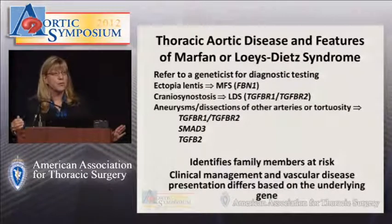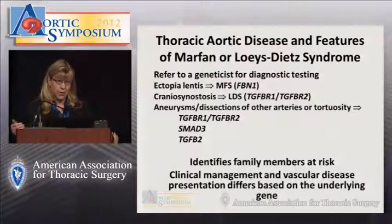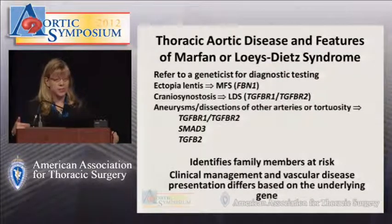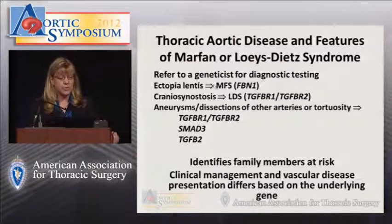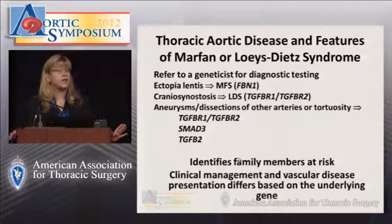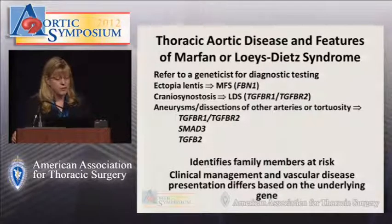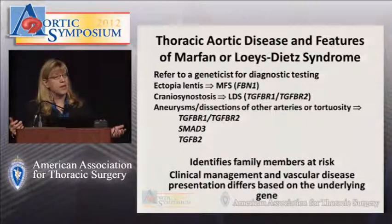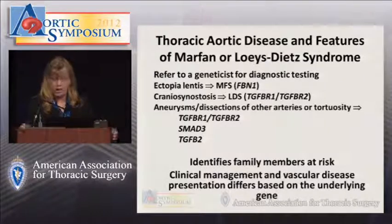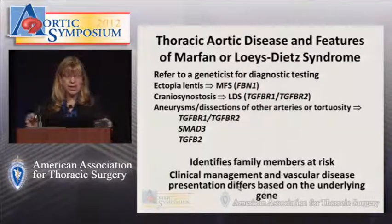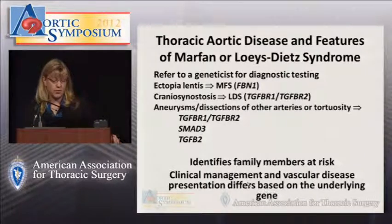In summary, if you have a patient with thoracic aortic disease, an aortic root aneurysm, and skeletal features similar to Marfan syndrome, refer to a geneticist for diagnostic testing. The testing will identify family members at risk and inform management. If you see a patient with ectopia lentis and skeletal features, it's safe to assume Marfan syndrome. If you see craniosynostosis or hypertelorism, think Loeys-Dietz. If family members have abdominal aneurysms or intracranial aneurysms, think SMAD3, TGF-b2, or TGF-BR1 and 2.